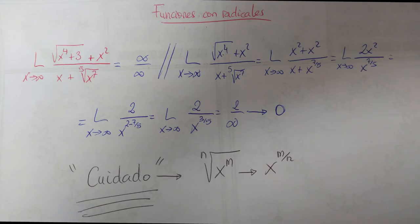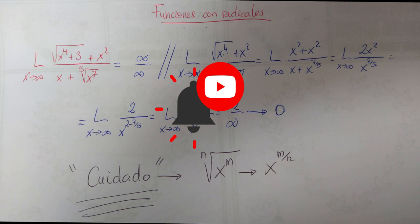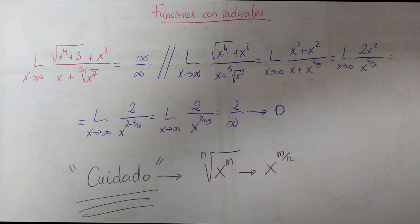Límite cuando x tiende a infinito de (√(x⁴ + 3) + x²) / (x + ⁵√(x⁷)). Eso también da infinito/infinito porque la raíz de infinito también es infinito. Nos quedamos con las x de mayor grado: la raíz cuarta de x a la cuarta más x cuadrado es x², y en el denominador x elevado a 7/5 es mayor que x. Entonces 2x² partido de x^(7/5), restamos los exponentes y quedaría el límite de 2/x^(3/5), que es 2/infinito, que por lo tanto es 0. Tener mucho cuidado: la raíz enésima de x^m es lo mismo que x^(m/n).